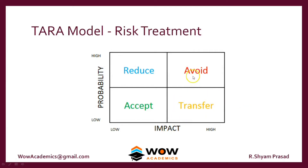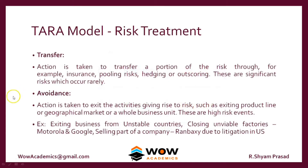The next one is Avoid. Here we have high impact — if this occurs, it is going to be a high impact — and the probability of it is going to be high. It is a very dangerous situation. Better what we shall do is altogether avoid it. If it is going to be very strategic, we can do it; if it is non-strategic, better we will avoid that activity. Action is taken to exit the activities giving rise to risk, such as exiting a product line, geographical market, or a whole business unit. These are high risks.